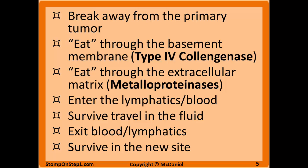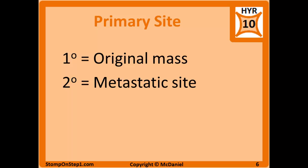To be able to spread, cancer cells need certain abilities which are gained via additional mutations. This is why it takes decades for malignant cancers to form. They need tons of genetic and epigenetic changes, including the ability to break away from their primary tumor, eat through the basement membrane — which they do via type 4 collagenase — eat through the extracellular matrix with metalloproteinases, enter the lymphatics and bloodstream, survive travel in the fluid, exit the blood and lymphatic system, and survive in the new site. The original tumor mass is called the primary tumor, and all subsequent masses are secondary tumors.